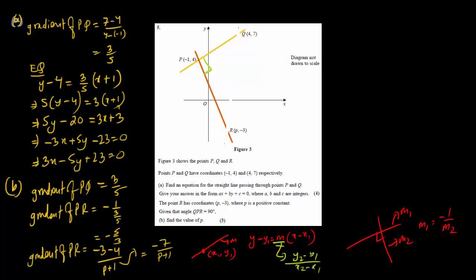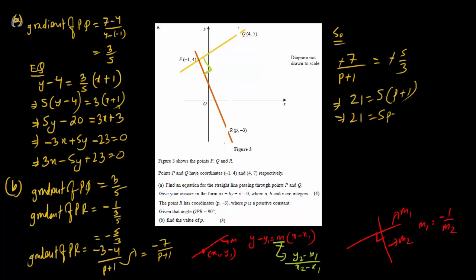Since the gradient of PR is minus 5/3, we equate: minus 7/(P + 1) equals minus 5/3. Cancelling the negatives and cross-multiplying: 21 equals 5(P + 1), so 21 equals 5P + 5, giving 16 equals 5P. Therefore P equals 16/5.